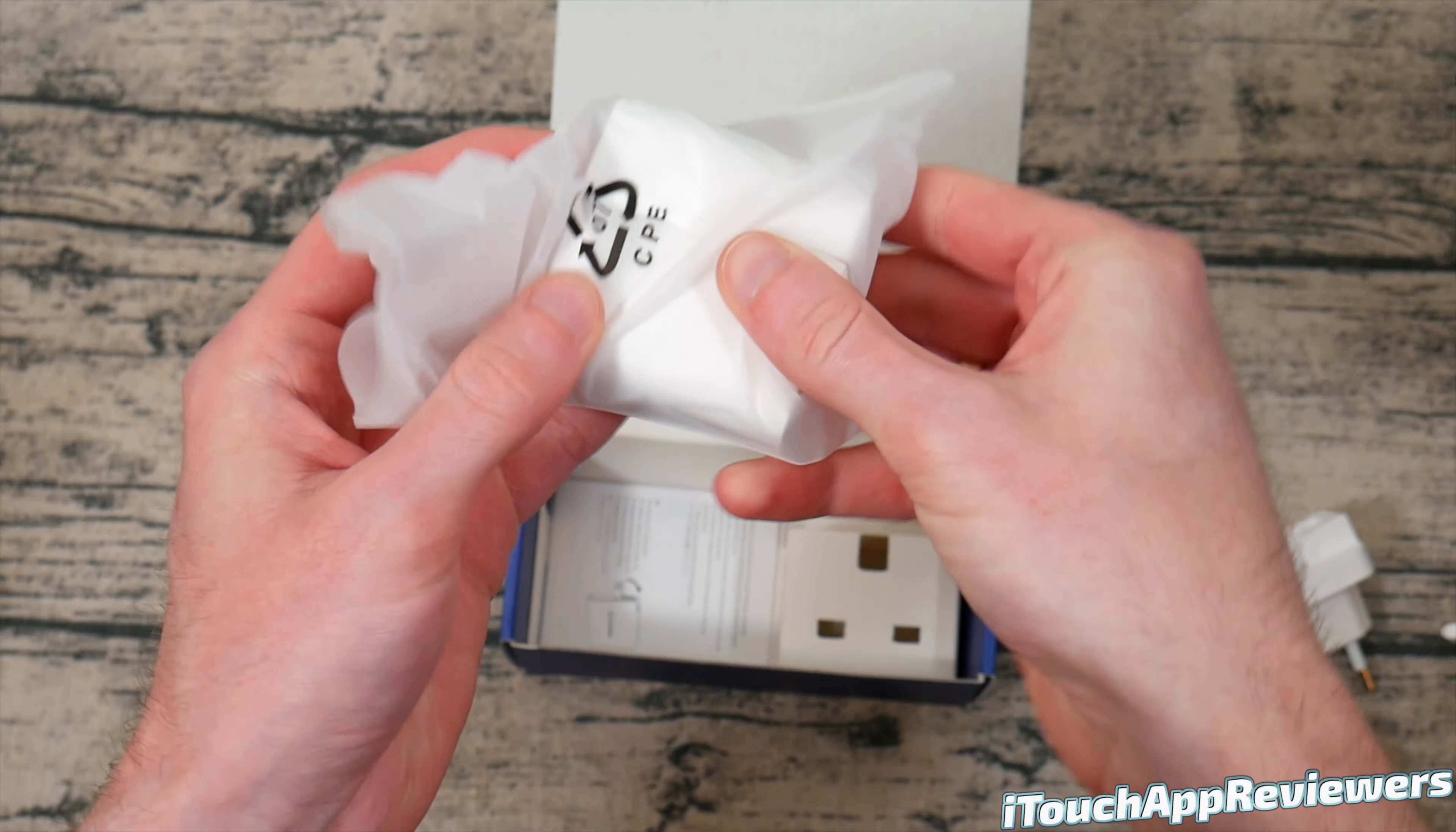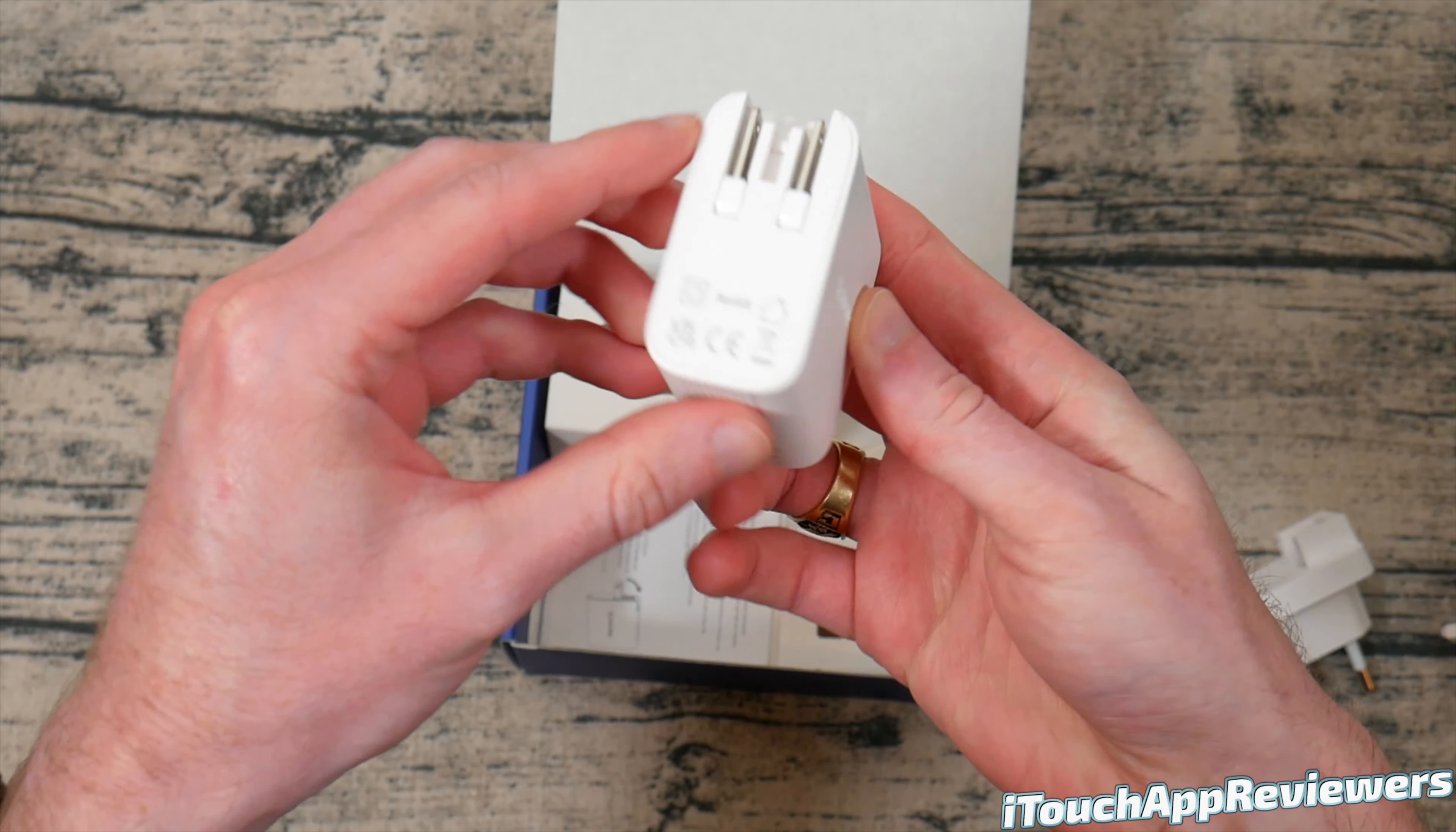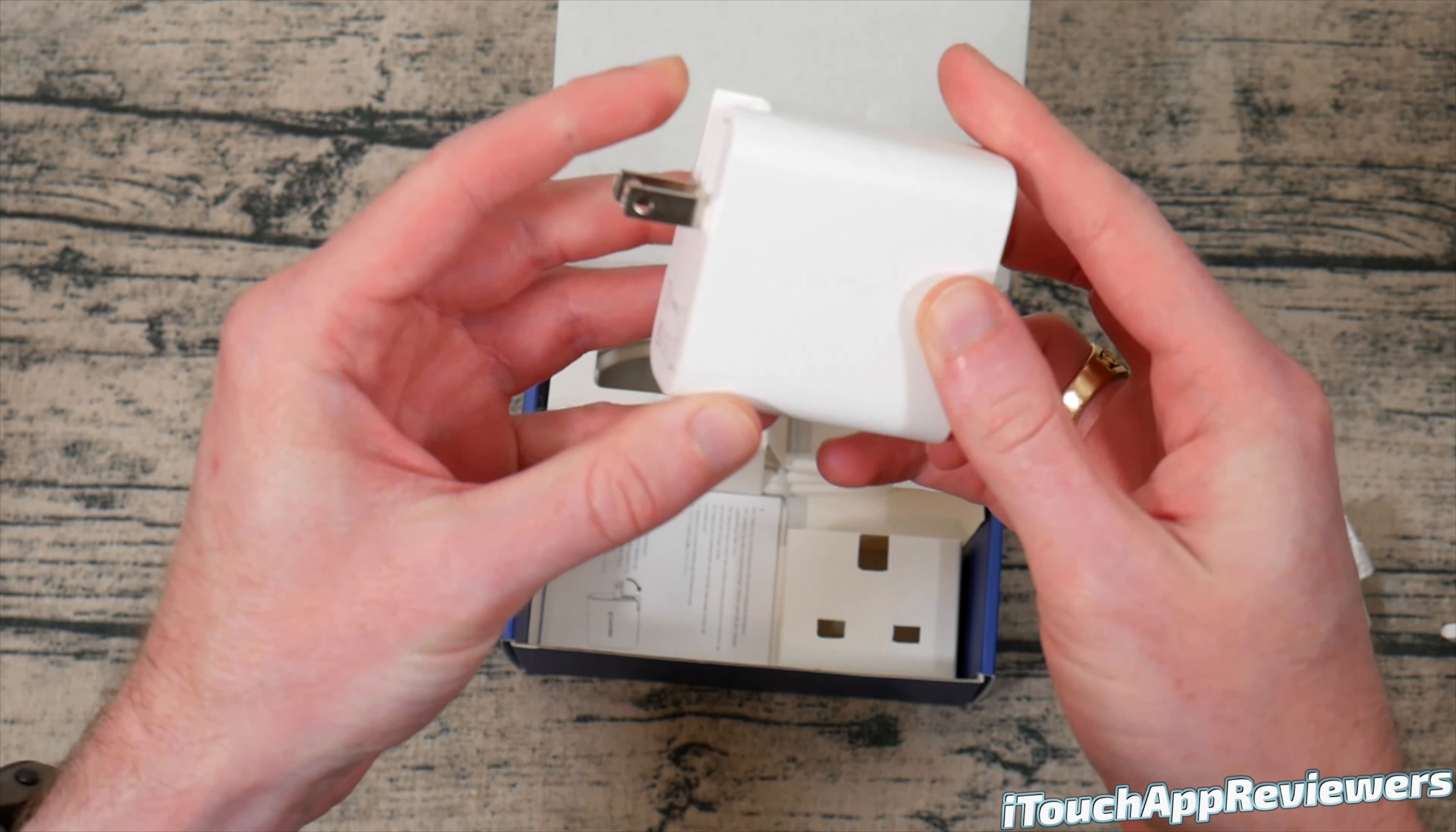And then here is the brick itself. Pulling that out. You guys can see standard USA wall prongs right there. It does say SyncWire right there in the middle. And there are the two USB-C ports right there. Port one and two. This first one has a computer and a phone. The second one just has a phone icon. So that lets you know about the wattages it puts out.